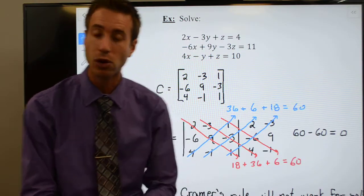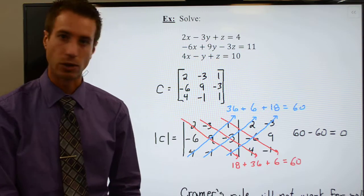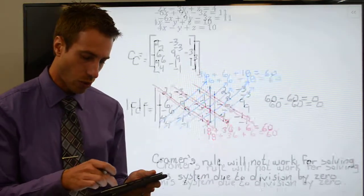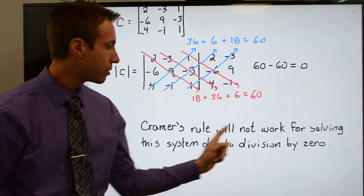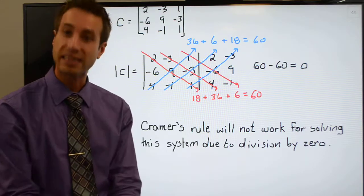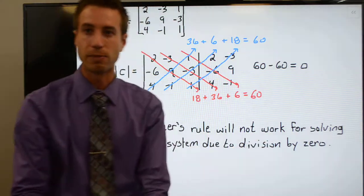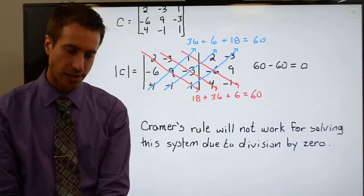What's gonna happen when I set up Cramer's rule is I'm gonna wind up with division by zero which is not allowed. And so what we know now is that Cramer's rule will not work for solving this system due to division by zero. You're gonna have to find some other method.